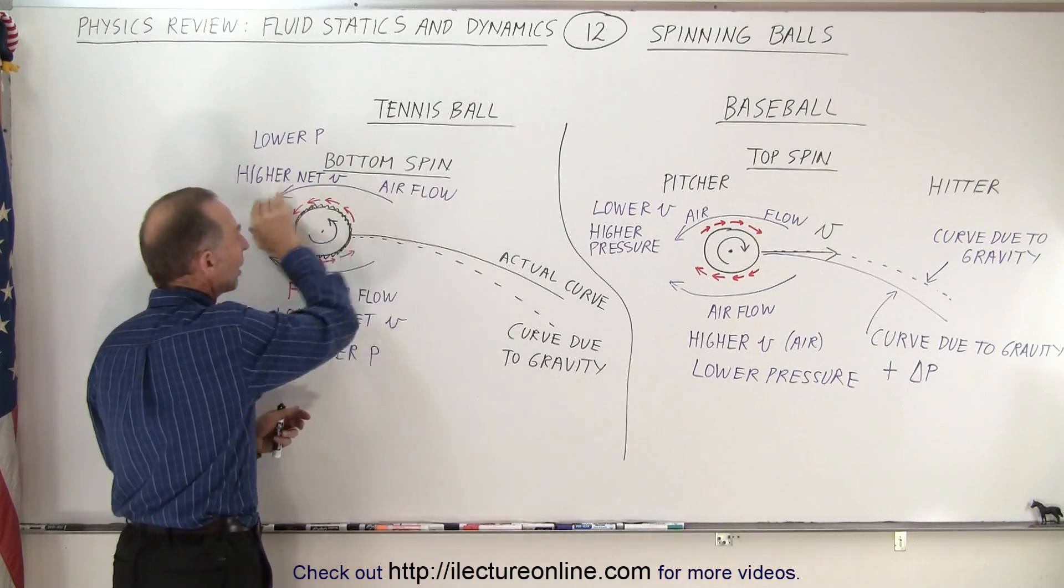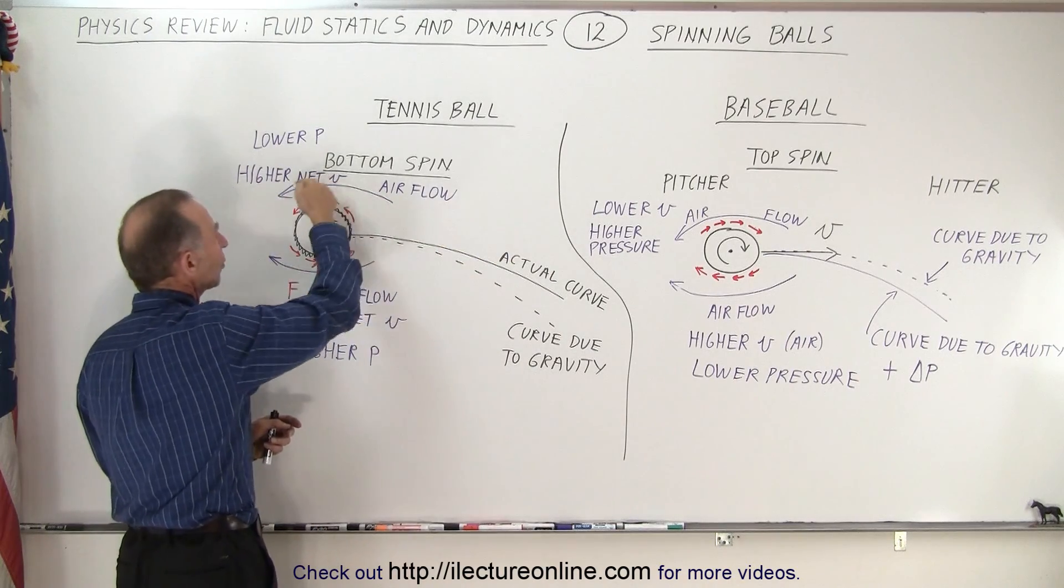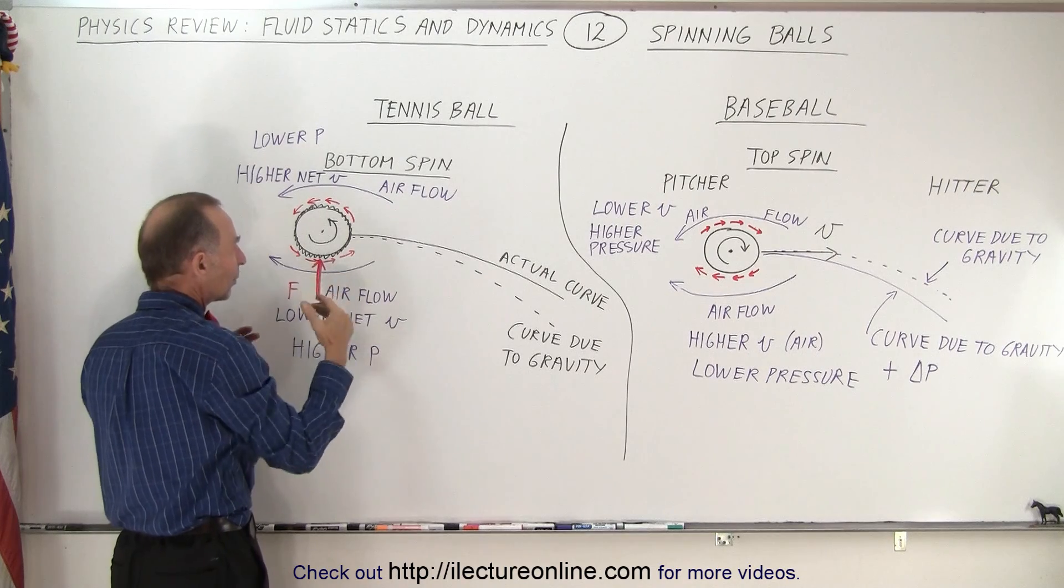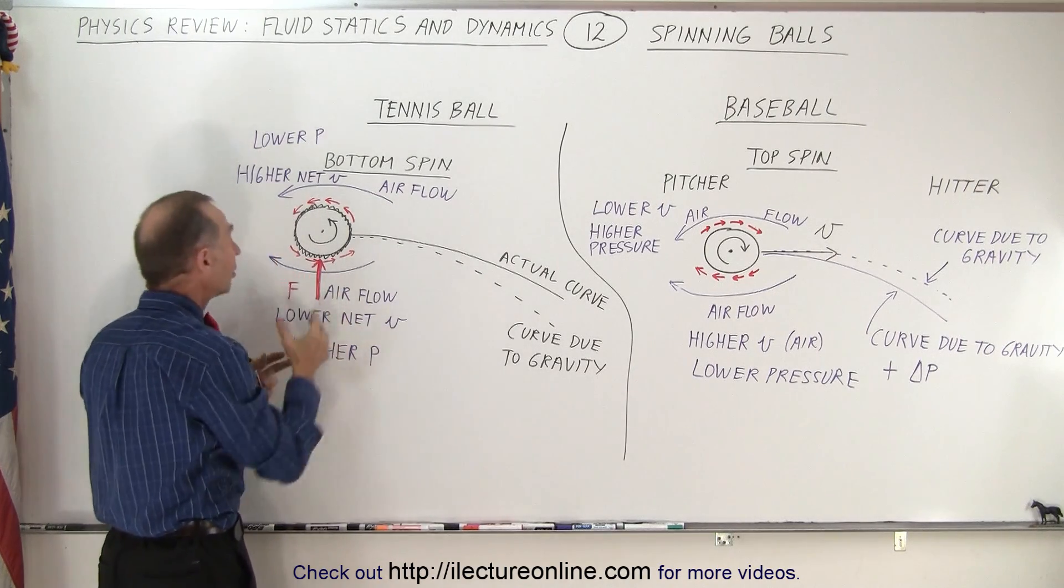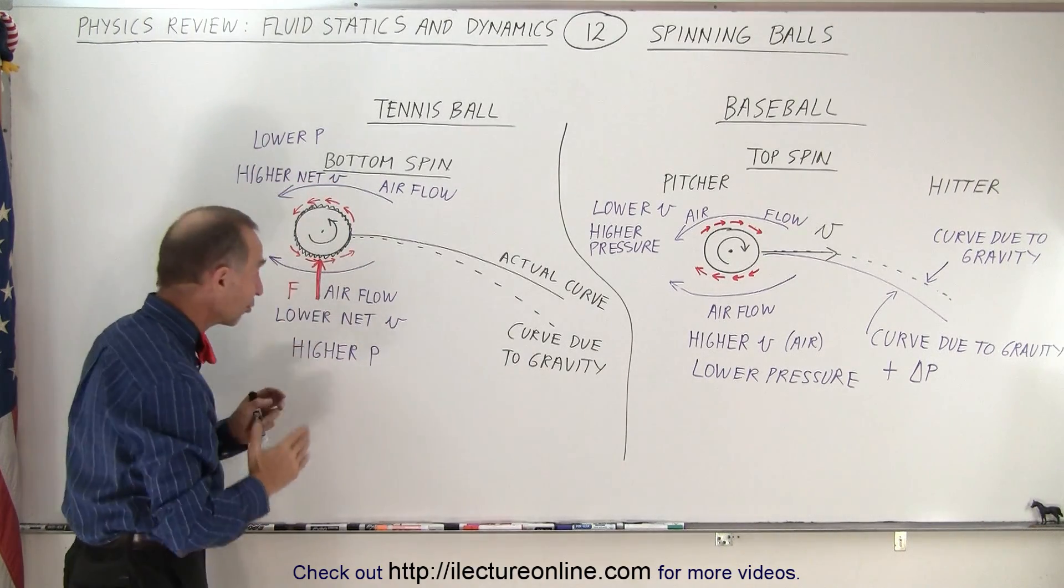You can see that the total velocity at the top will be greater, the total velocity at the bottom will be smaller. Smaller velocity means greater pressure, greater velocity means lower pressure. So you have a net force due to the difference of pressure upward.